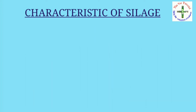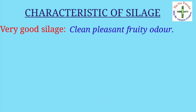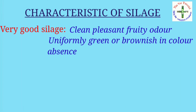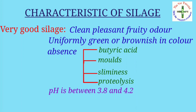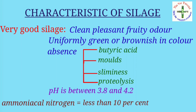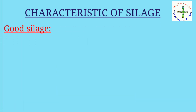Now let's study the characteristics of silage. Very good silage has a clean, pleasant, fruity odor; is uniformly green to brownish in color; with absence of butyric acid, absence of molds, absence of sliminess, and absence of proteolysis. The pH is between 3.8 to 4.2, and the amount of ammoniacal nitrogen should be less than 10 percent of total nitrogen.